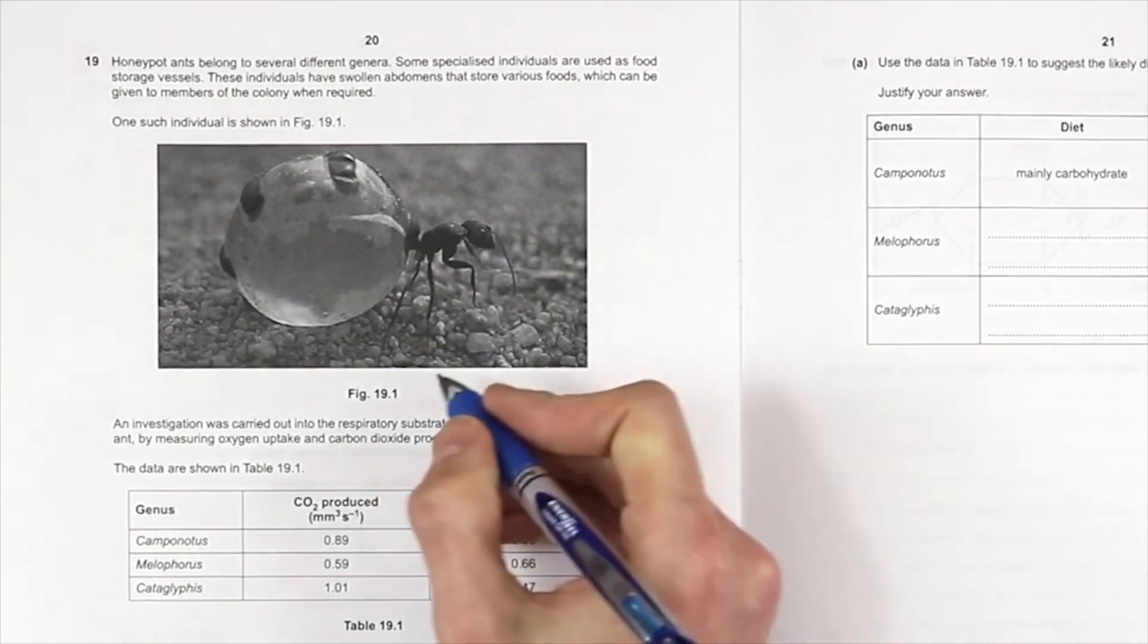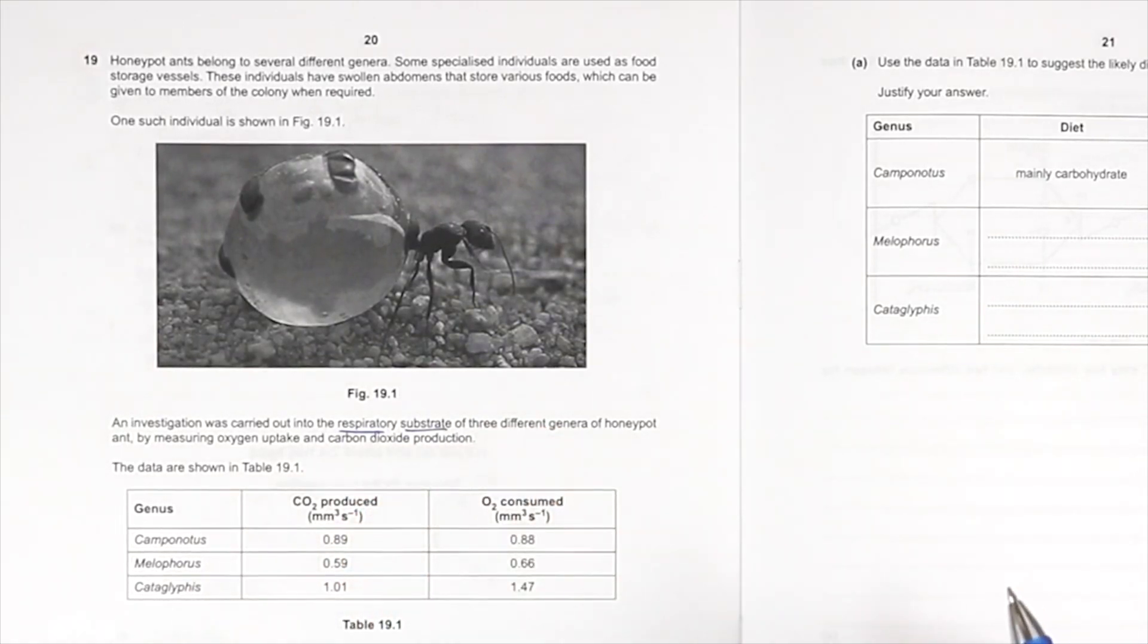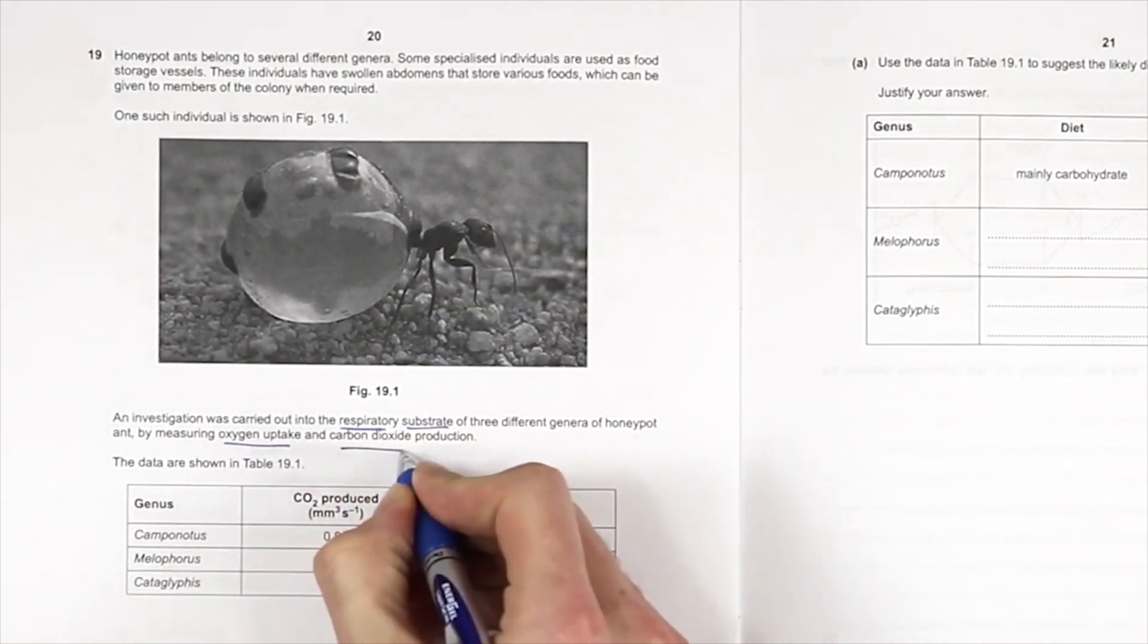An investigation was carried out into the respiratory substrate of three different genera of honeypot ant by measuring the oxygen uptake and carbon dioxide production.